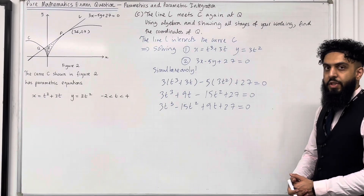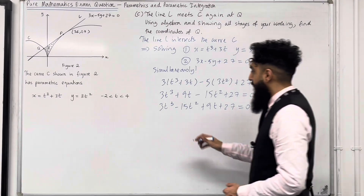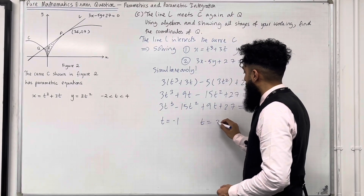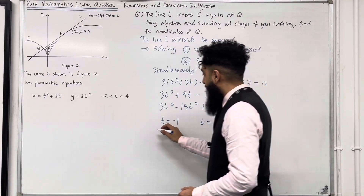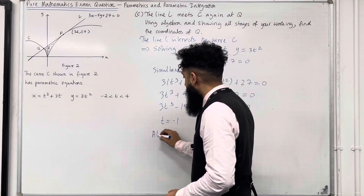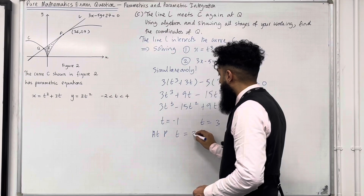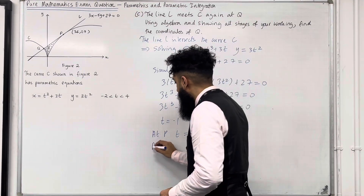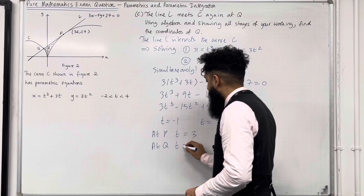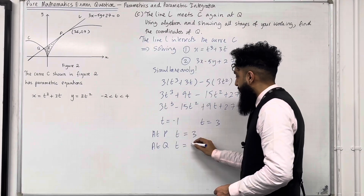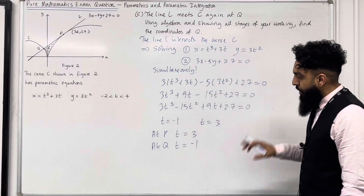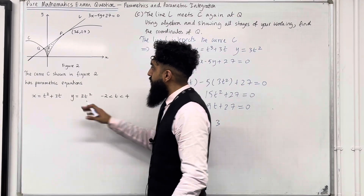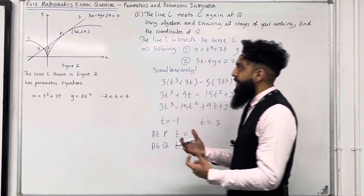Solving this cubic equation gives t = −1 and t = 3. We know that at P, t = 3, which was given in the question. Hence at Q, t must equal −1.